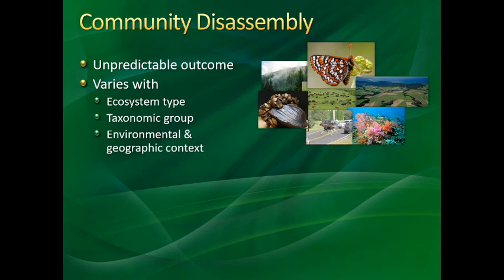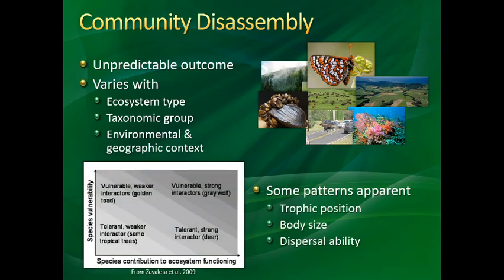When we think about community disassembly in permanent ecosystems, there are often very unpredictable outcomes. Every ecosystem type and every taxonomic group is expected to act differently — all sorts of different types of organisms will respond very differently to something like habitat fragmentation. Each individual ecosystem has specific environmental or geographic context unique to that area. But through this work, we've seen some patterns: trophic position matters — things higher on the food chain tend to disappear first. Larger-bodied organisms tend to disappear more easily, and things that can't disperse tend to go away quicker.